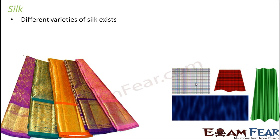If you have ever been to a sari shop, you would have heard that there are many different types of silk. You will encounter different names like tassar silk, muga silk, banana silk, and so many others. All of them vary in price and quality, even though they are all natural silk.